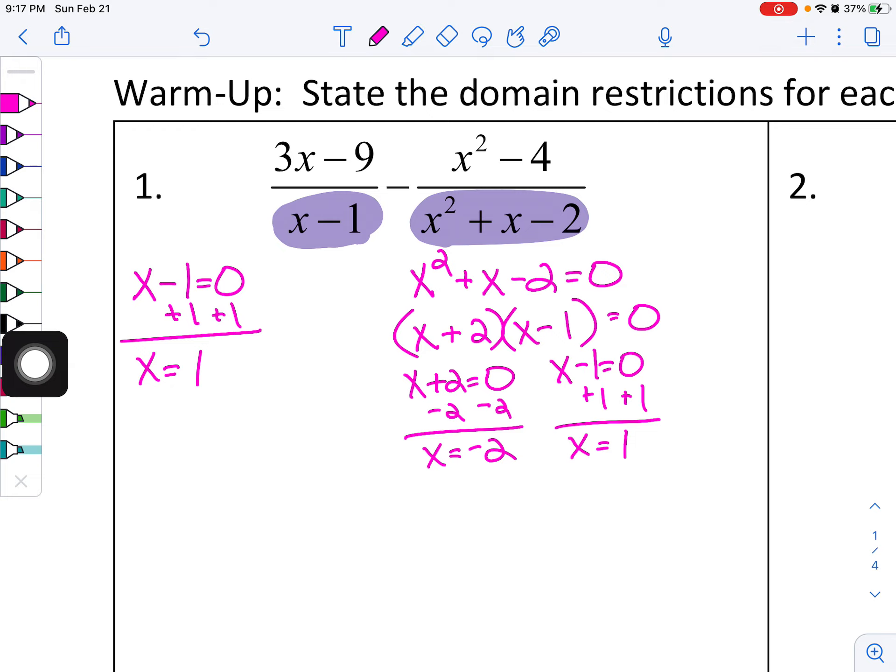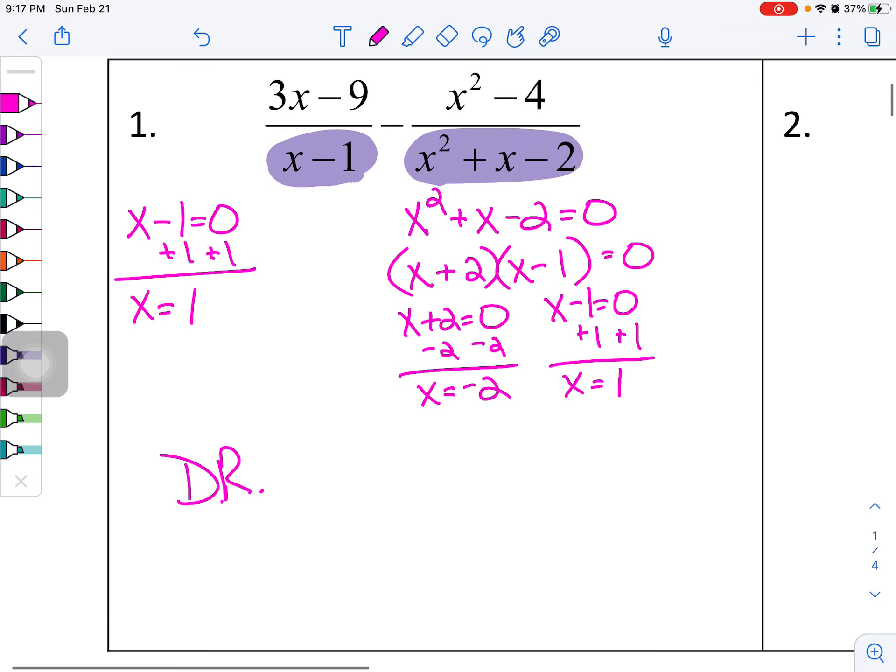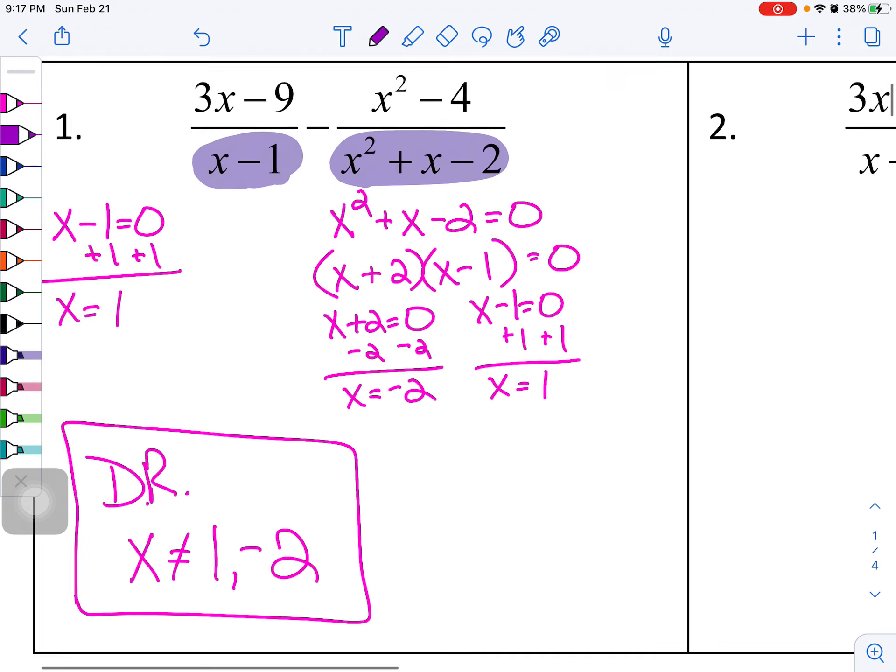Now, it's okay that these two duplicate. That's totally fine. When we talk about domain restrictions, you only need to write down each unique value for x—you don't have to write down duplicates. You don't need to tell me x cannot equal one, one, or negative two. This is a duplicate, just include it one time. So x cannot equal one or negative two.